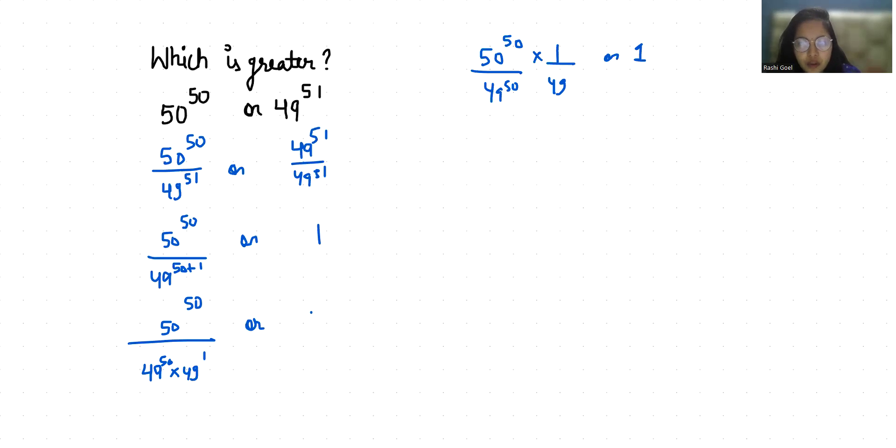Now 50 by 49 whole power 50 times 1 by 49 or 1. So when we divide 50 by 49, we get 1.02 something whole power 50. So 1.02 whole power 50 by 49.